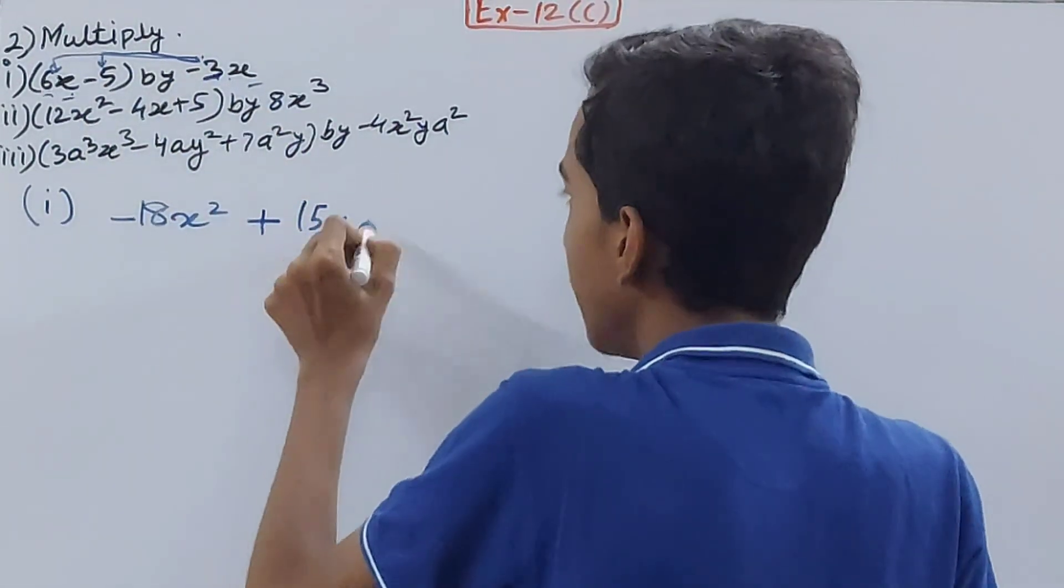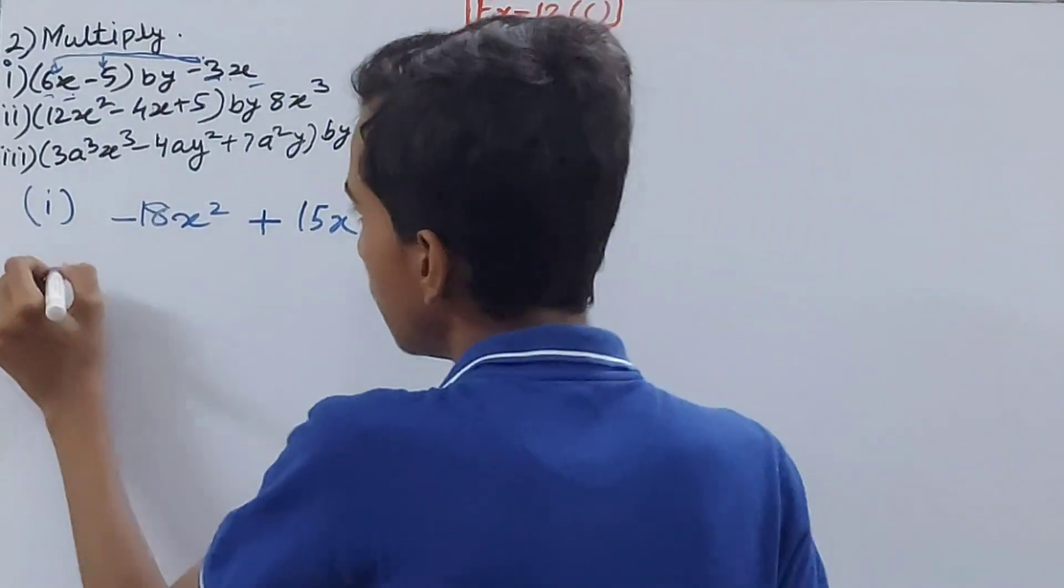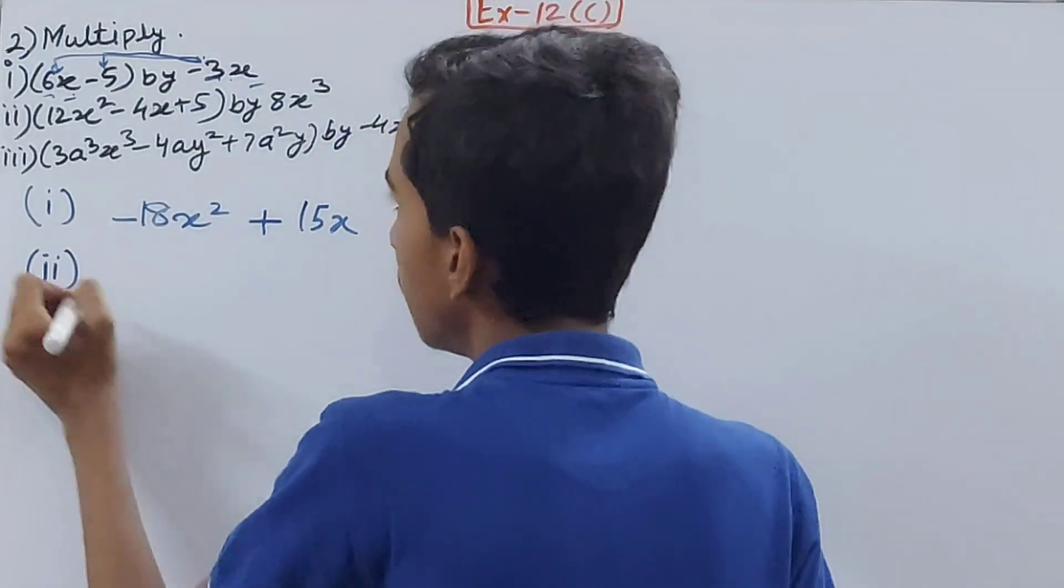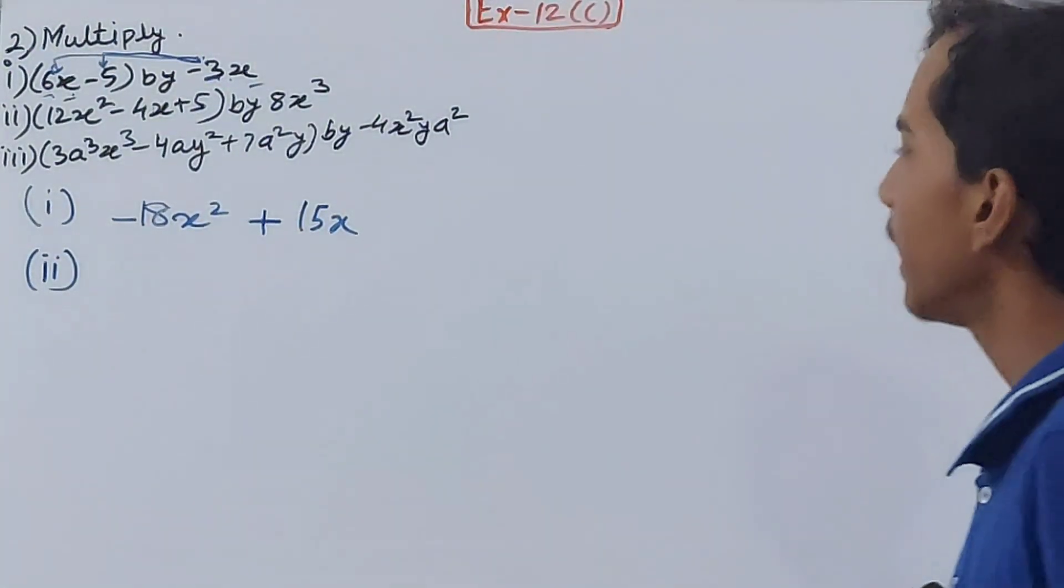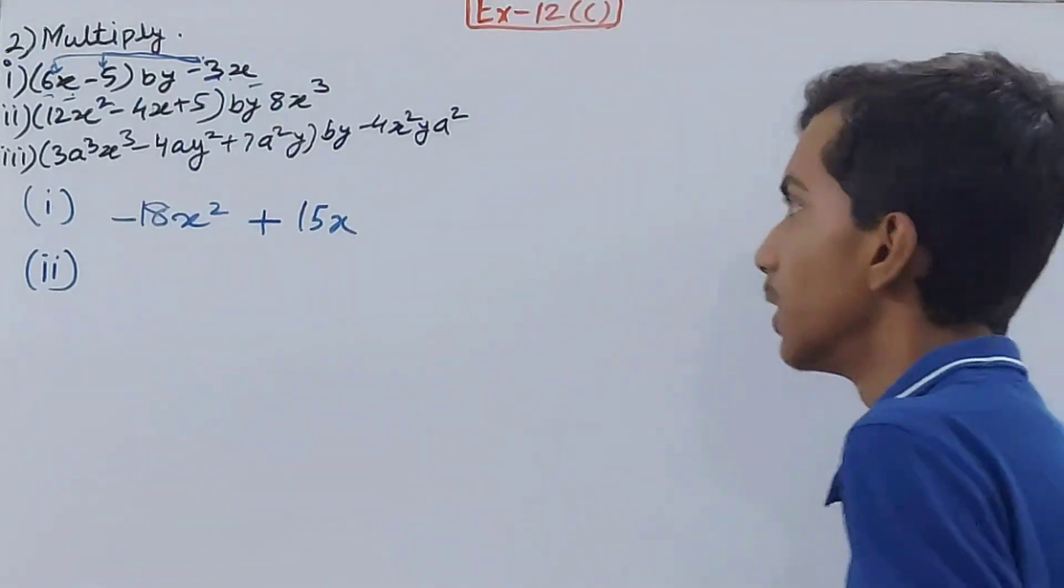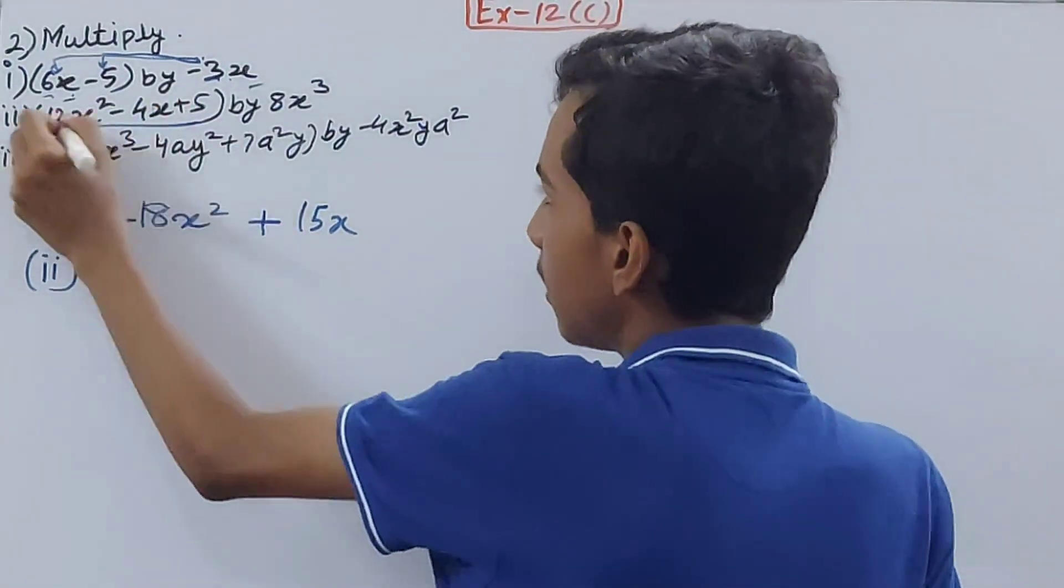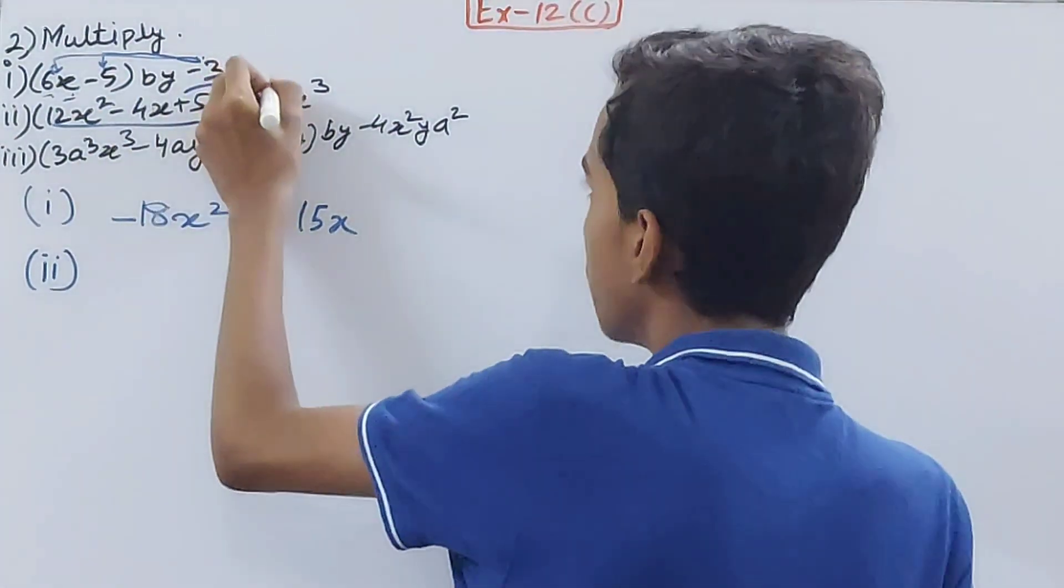The second part: (12x² - 4x + 5) by 8x³. Again, all three terms in this trinomial will be multiplied with 8x³.